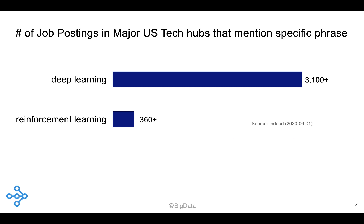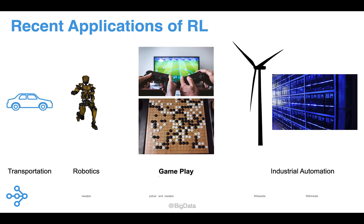RL is no longer just a research endeavor. At least in major tech hubs in the United States, the number of jobs that mention reinforcement learning is already about one-ninth the number of job postings that mention deep learning. And as many of you may be aware, deep learning is a hot topic in industry. If you ask a random developer if they know of any applications of RL, chances are they'll point to gameplay, because RL has been used to win challenges against humans in multiplayer video games and board games.